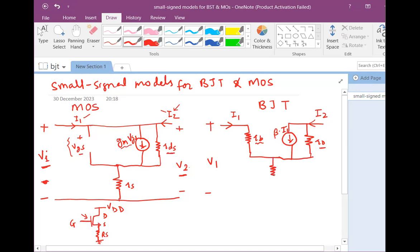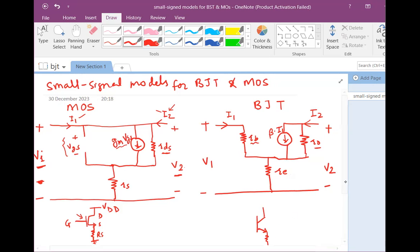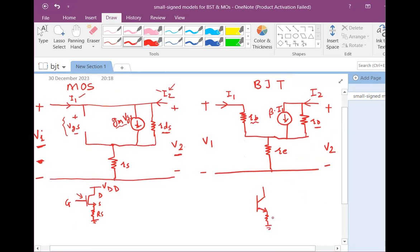Then from the emitter you have a resistance called small re, with respect to ground. Here the output voltage is v2. The transistor circuit for which this small signal model was drawn can be shown like this: here you have a ground, this is your resistor re, then you have vcc.